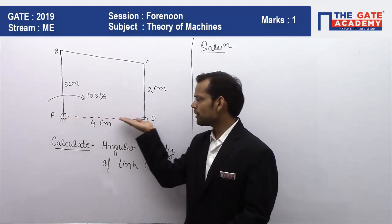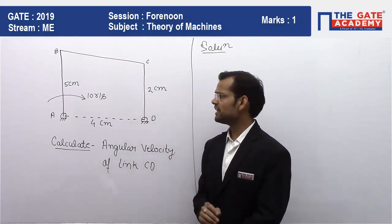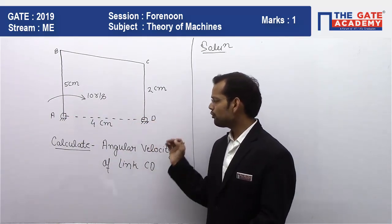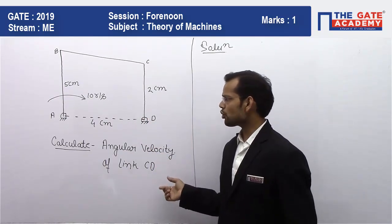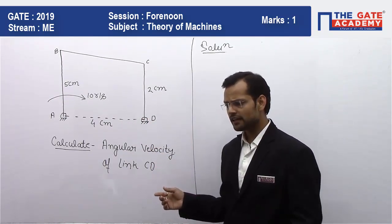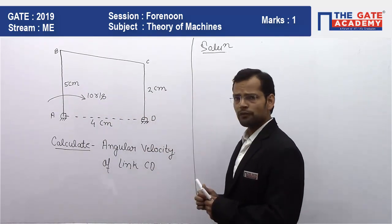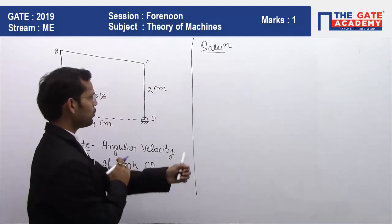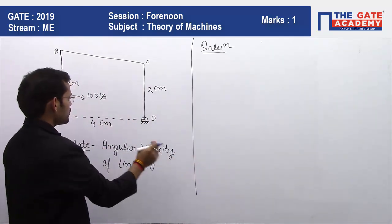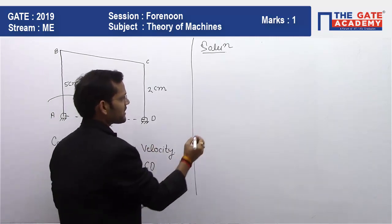This question can be easily solved by the relative velocity method. For that, we will have to draw its relative velocity diagram or linear velocity vector diagram. So how can the linear velocity diagram for this particular mechanism be drawn?